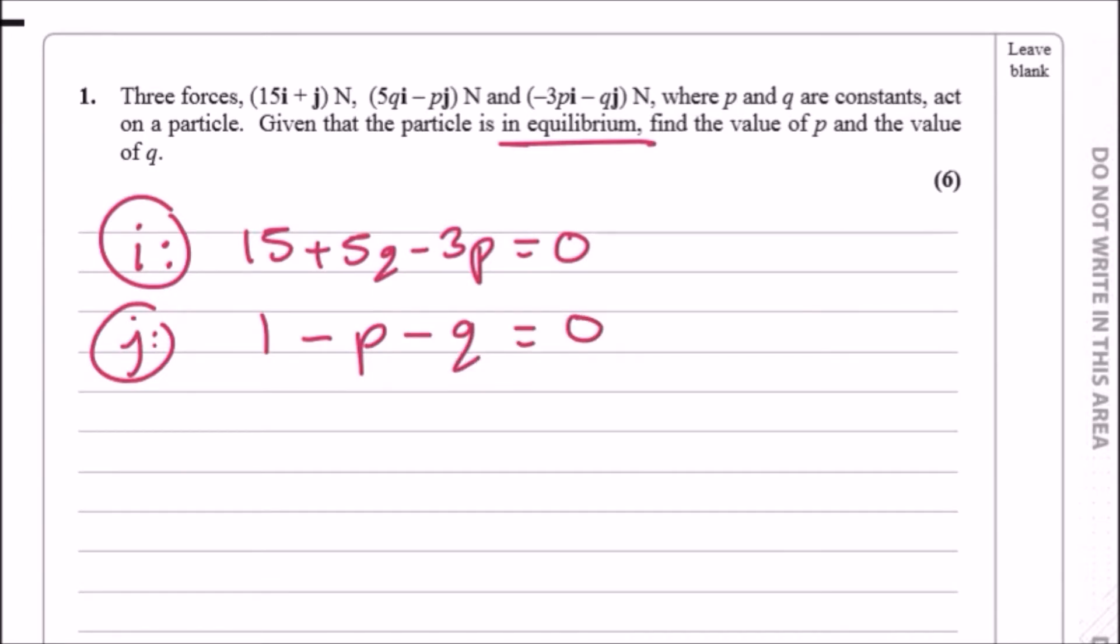To make our life easier, let's just find a common coefficient. Let's multiply the second equation by 3 so we can eliminate the 3p. Doing that, we should have 3 here, 3p, and 3q.